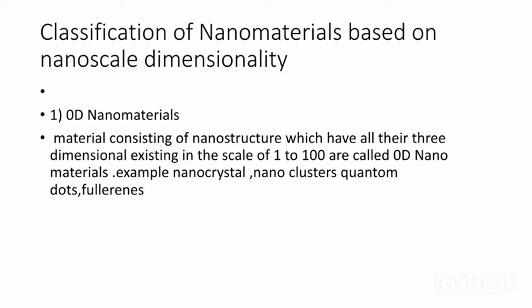Classification of Nanomaterials based on Nanoscale Dimensionality. The first one is 0D Nanomaterials, the second one is 1D Nanomaterials, and the third one is 2D Nanomaterials. Now, how do we classify them?